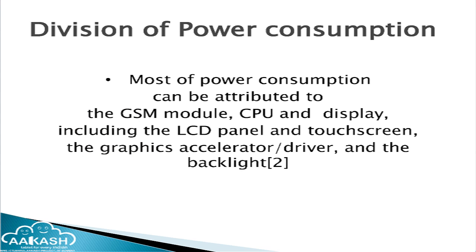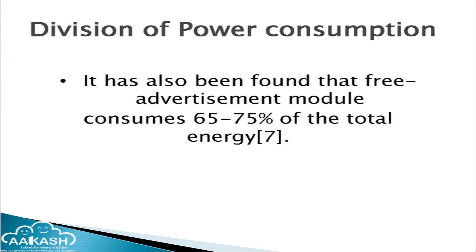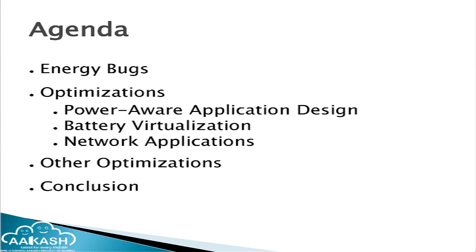If we look at the division of power consumption among different components, the major consumers of power are the GSM module, CPU, and display. Display includes the LCD panel, touch screen, graphics driver, and backlight. If those components are not being used, we can just turn them off to reduce energy consumption. The most effective power management approach is to shut down unused components. It has also been found that free apps with advertisement modules consume 65 to 75 percent of total energy due to IO energy wasted in those modules. In this talk we will see many optimizations at the application level so each developer can contribute to saving energy for end users.